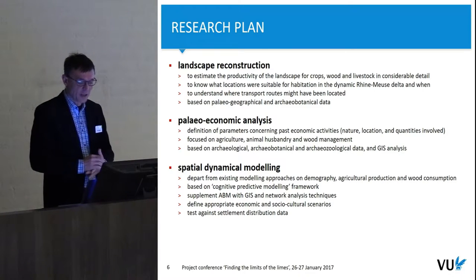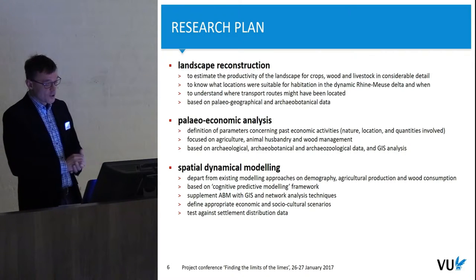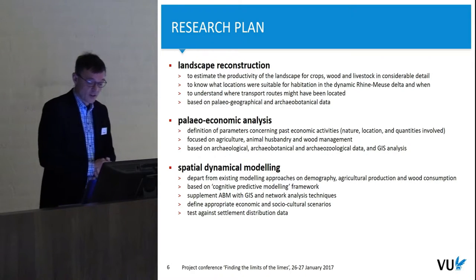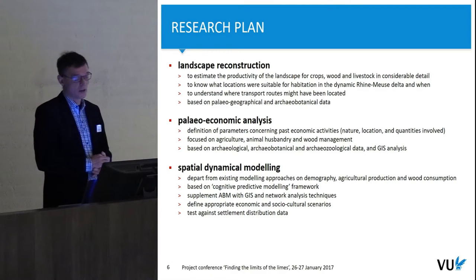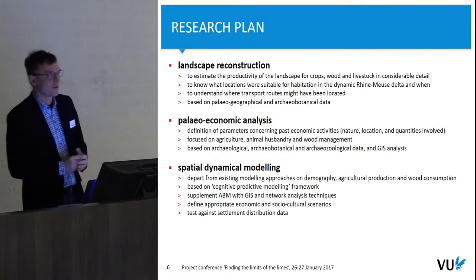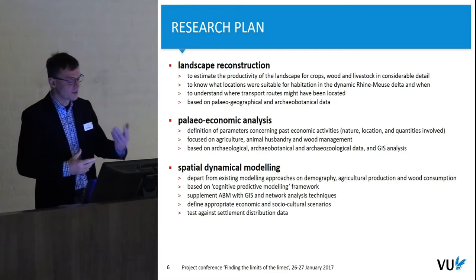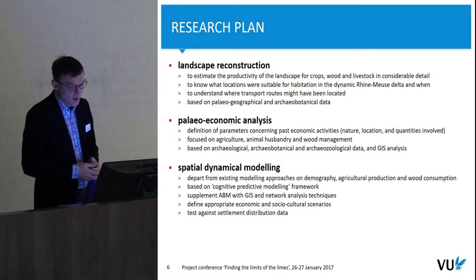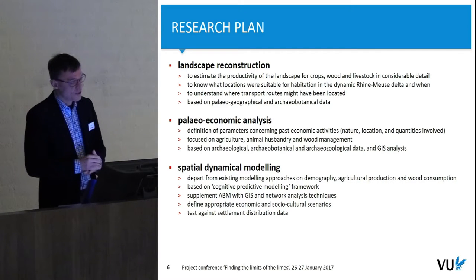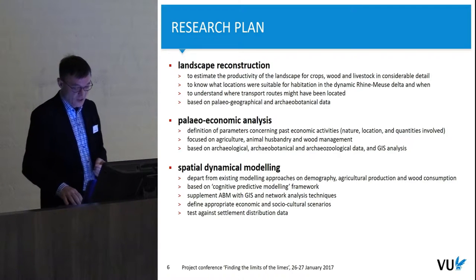The spatial dynamical modeling itself departed from existing demographic models, agriculture production models, and wood consumption models, based on the cognitive predictive modeling framework — the idea that agents, people, have choices they can make consciously, and that their decisions will impact other people and the landscape itself. We also wanted to supplement agent-based modeling with network analysis techniques, since at the time ABM was still not very good at dealing with spatial data. These things are improving rapidly now. In the end, we had to define appropriate economic and social-cultural scenarios and test them against settlement distribution data.